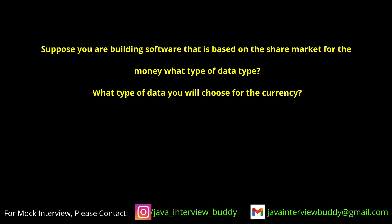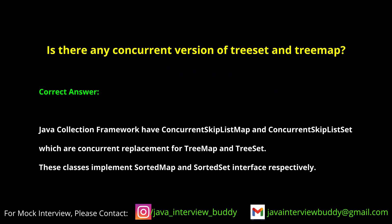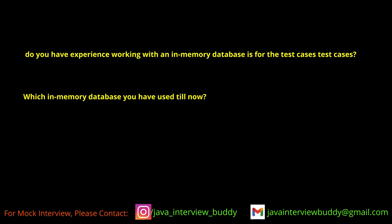We have TreeMap and TreeSet in Java collections. Are there any concurrent versions of these? I have not utilized any concurrent versions of collections specifically. There are ConcurrentHashMap and ConcurrentList available, but I have not used them. Regarding TreeMap and TreeSet, I haven't found a use case for them in my work.